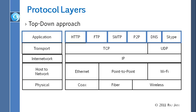For applications, we have HTTP, FTP, SMTP, P2P, DNS, Skype, and so on and so forth — these are all applications. In this chapter, we are going to talk about only those things on the top of the stack. We are not going to talk about much of the lower layers.